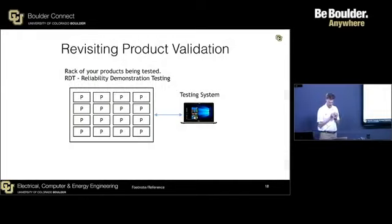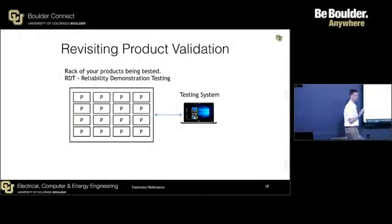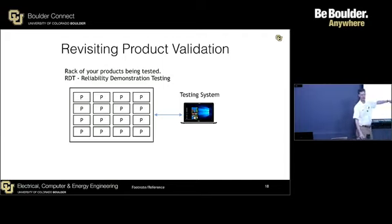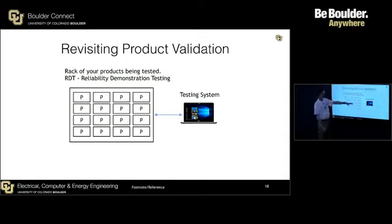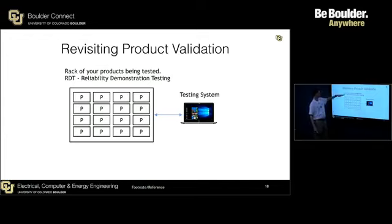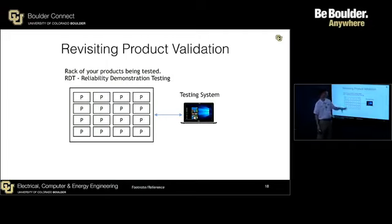Revisiting product validation. Here's a cartoon picture of a rack of your products. P is your product — whatever it is, some device, might be that hypothetical board I showed earlier. Most companies do this. It's called RDT at most places where I've worked. RDT stands for Reliability Demonstration Testing. You put a whole bunch of your products in a rack and you run them for a while.